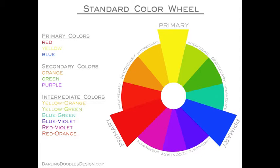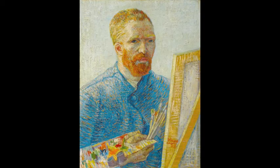Complementary colors are colors that are opposite of one another on the color wheel, and they also feel like they're opposite when you see them together. Red and green is an example — if I put a red next to a green, it's going to look extra red. Many artists incorporate complementary color schemes into their work. For example, this Van Gogh painting, Self-Portrait as a Painter, uses the complementary color scheme of blue and orange.